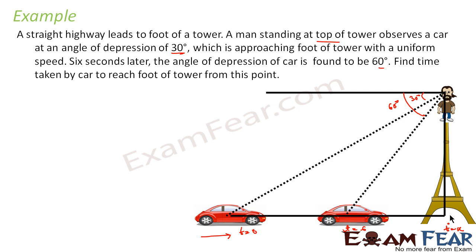Let's draw the triangle and name the points: A, B, C, and D. The angle at C is 60 degrees, so the interior angle will also be 60 degrees. The angle at D is 30 degrees, so that interior angle will also be 30 degrees.